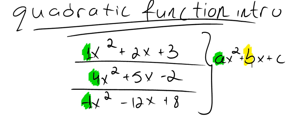What about the b? Okay, so we got positive 2 for the b in here, positive 5 for the b in here, and negative 12 for the b in here. And the last one,